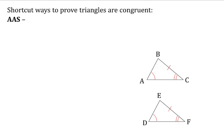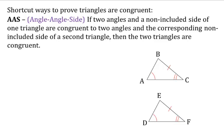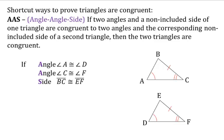Now let's look at angle-angle-side, or AAS. This says that if two angles and a non-included side of one triangle are congruent to two angles and the corresponding non-included side of a second triangle, then the two triangles are congruent. So we have two angles in a row and then a side that is not between them. Angle A is congruent to angle D, angle C is congruent to angle F, and side BC is congruent to side EF. So triangle ABC is congruent to triangle DEF.